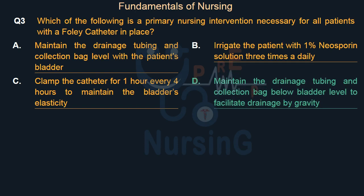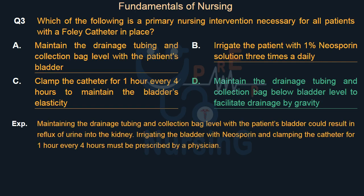Maintaining the drainage tubing and collection bag level with the patient's bladder could result in reflux of urine into the kidney. Irrigating the bladder with neosporin and clamping the catheter for 1 hour every 4 hours must be prescribed by a physician.